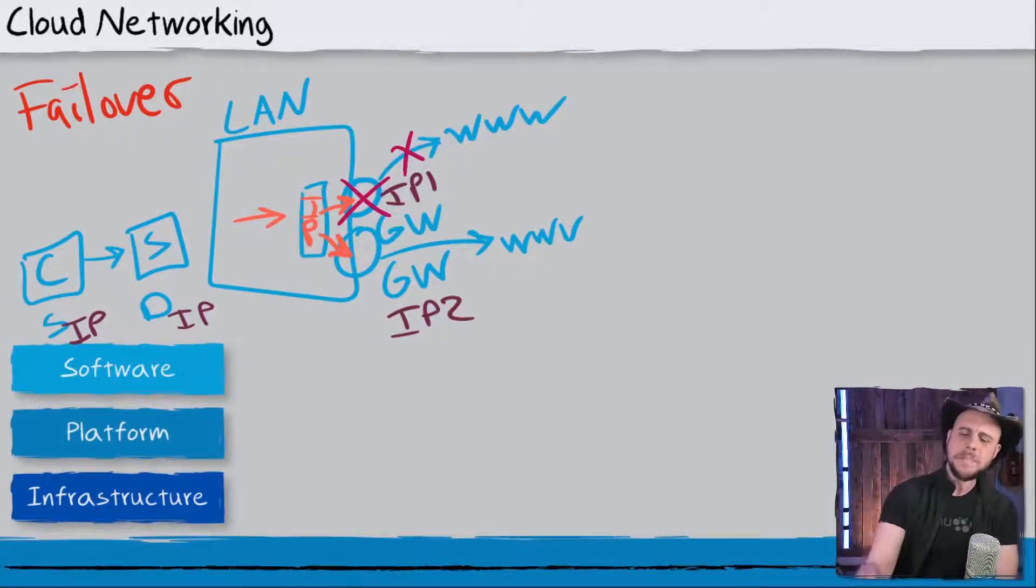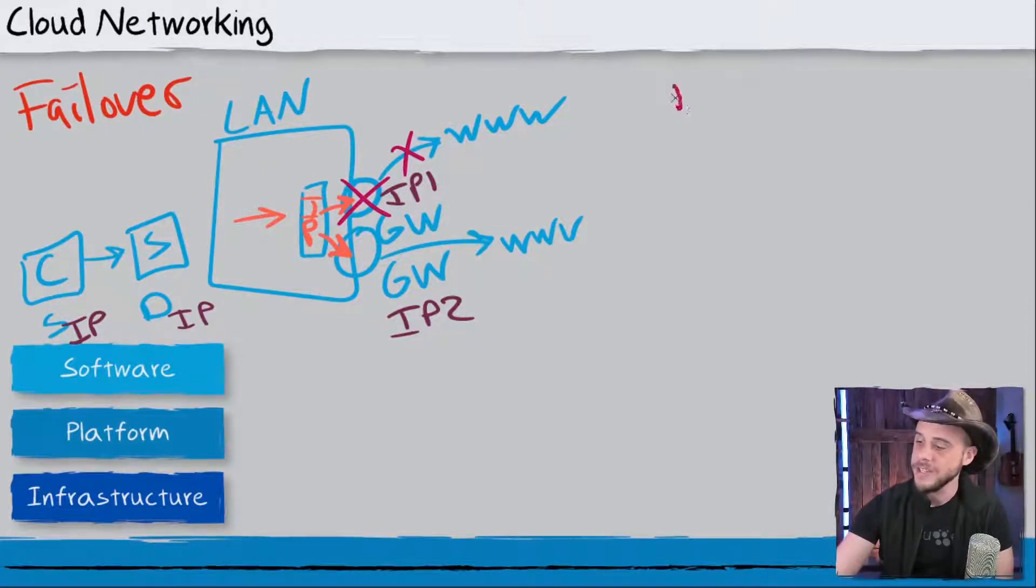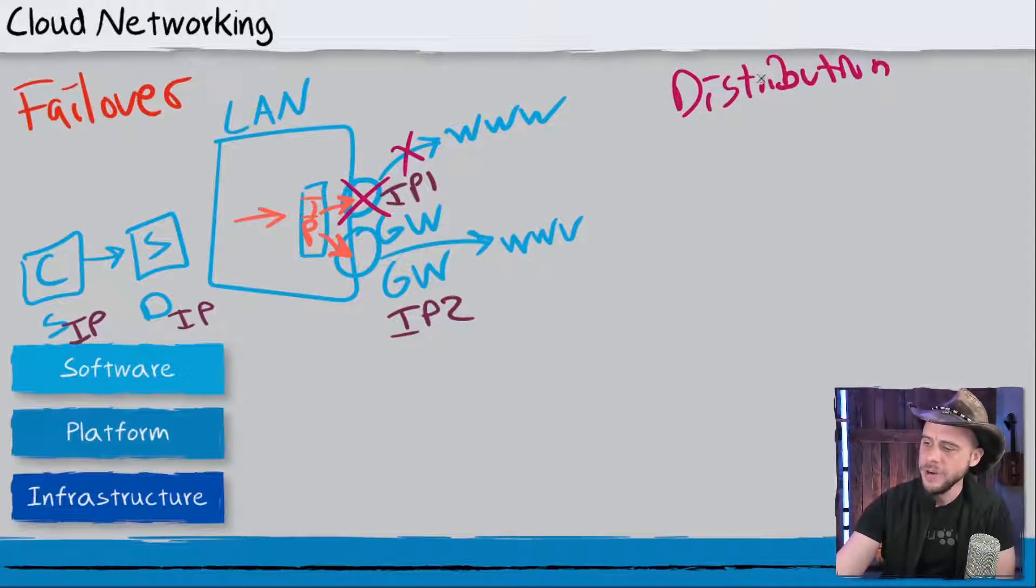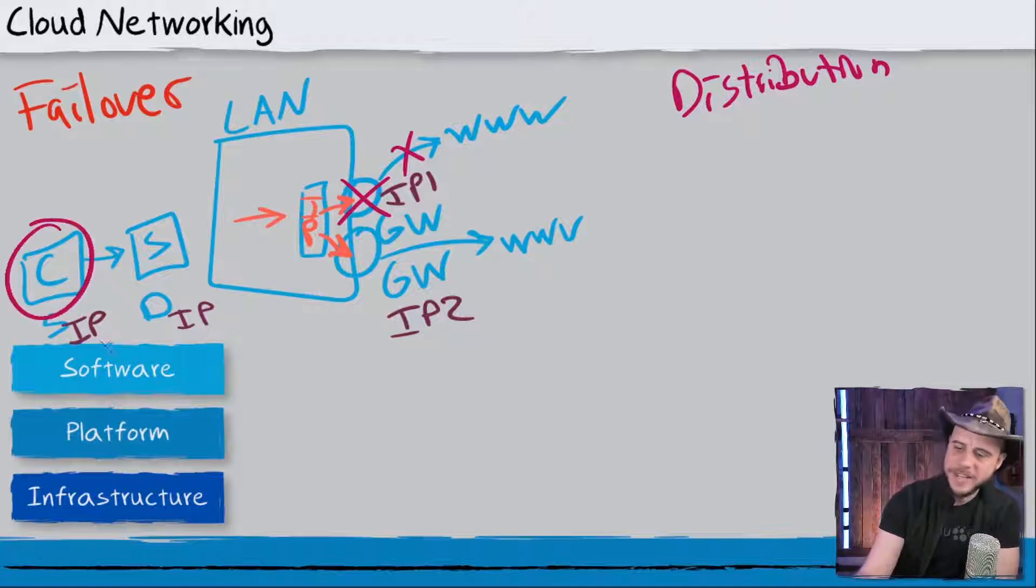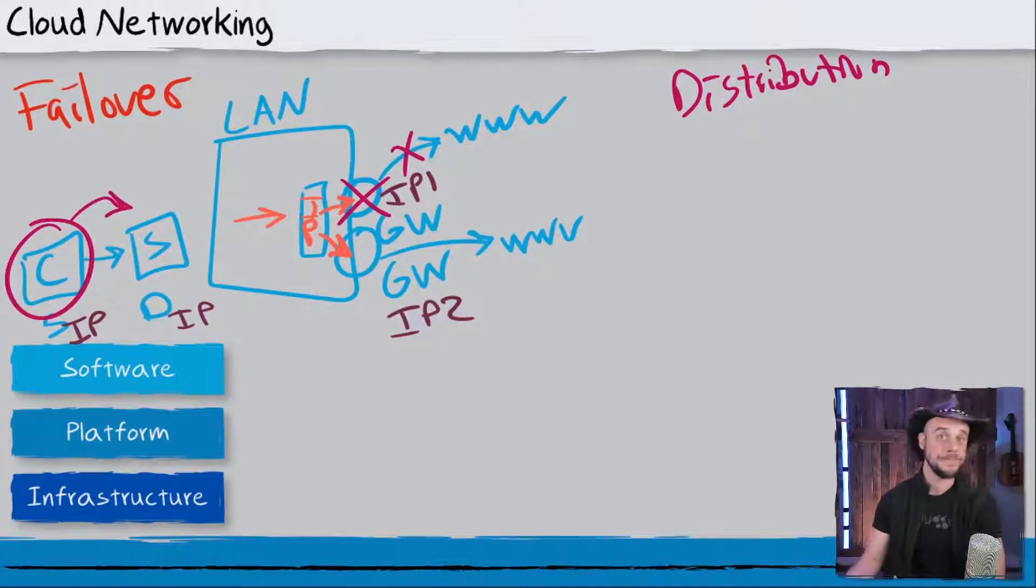So that kind of builds the basic principle behind failover. The other idea that you heard me talking about was distribution. And in order to really understand what we care about here, we want to understand a little bit more about how we handle capacity. Let's imagine for a minute that your client over here is sending traffic to a server. The point is, eventually the server runs out of resources.